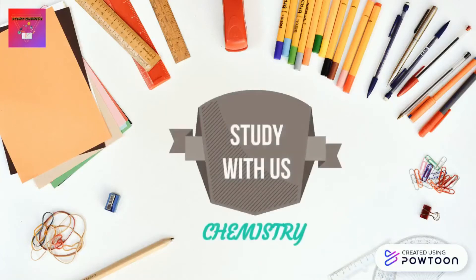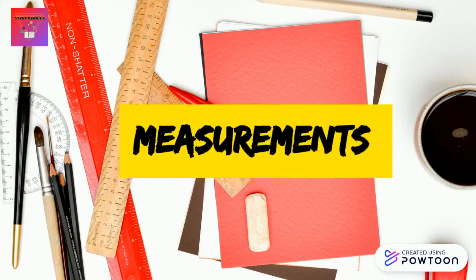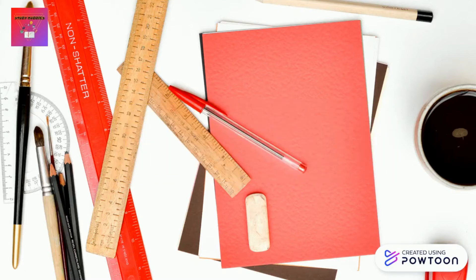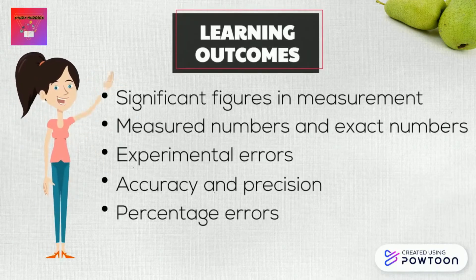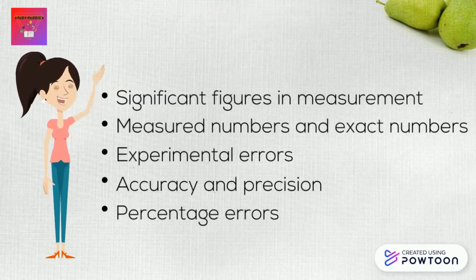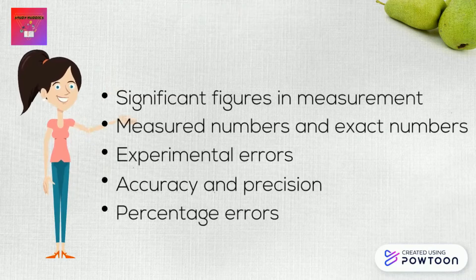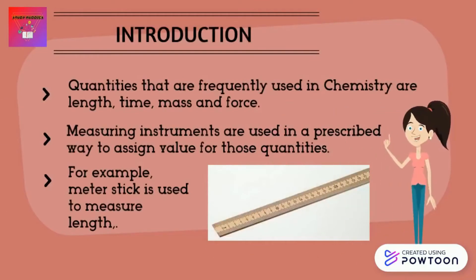Hello everybody, welcome back to our channel. Today in this video we are going to study about measurements in chemistry. Basically, chemistry is a quantitative science because it describes nature using quantities which are measurable. In this video I am going to explain about significant figures in measurements, measured numbers and exact numbers, experimental errors, accuracy and precision, and finally percentage errors.